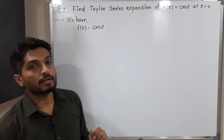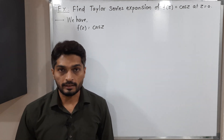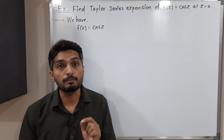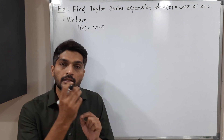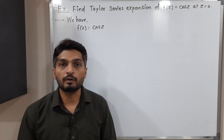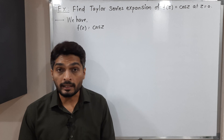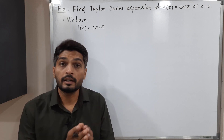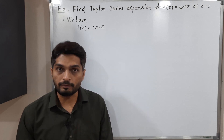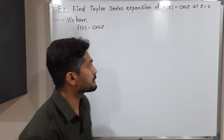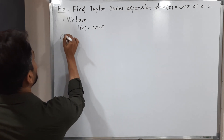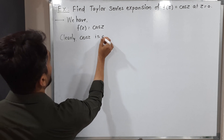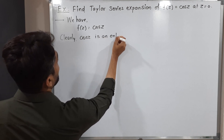I have already written the function f(z) = cos(z). The basic condition for finding a Taylor series is that the function must be analytic in the neighborhood of that point. We have cos(z), which is analytic at each and every point of the complex plane, so we can say it is an entire function. Therefore, clearly, cos(z) is an entire function.